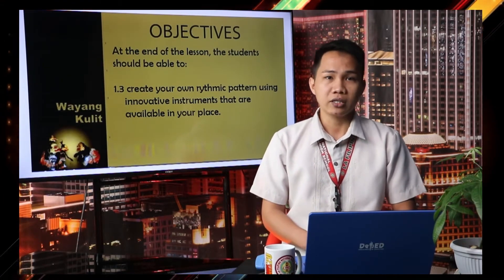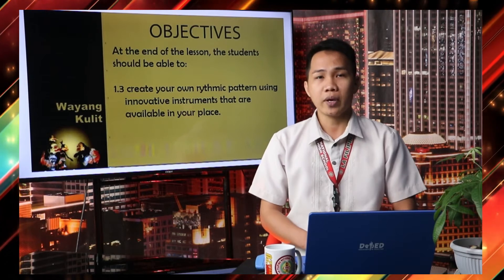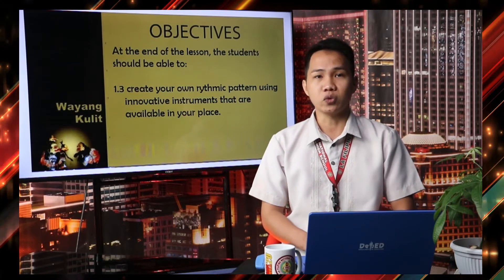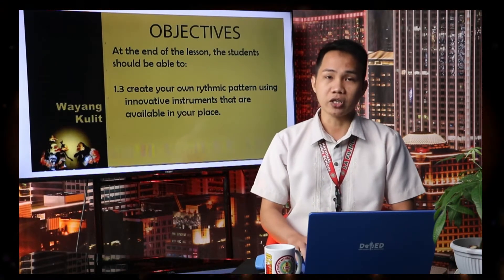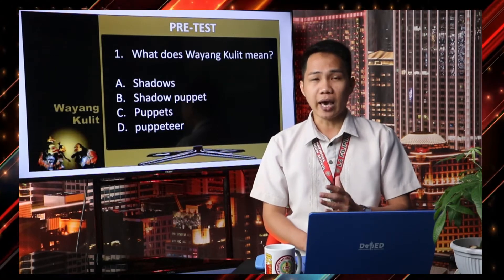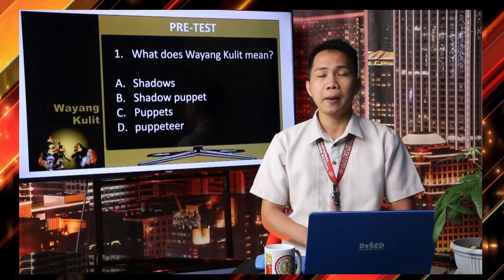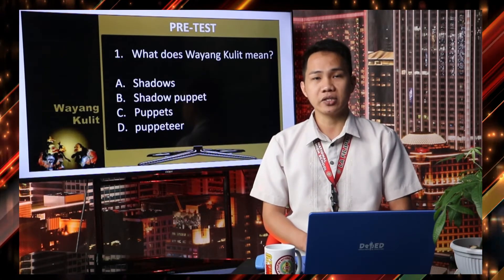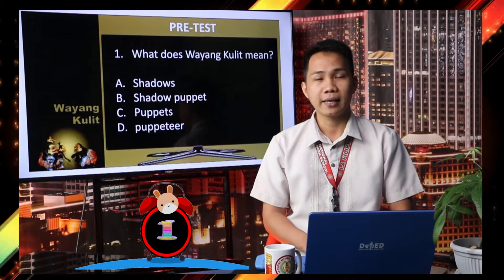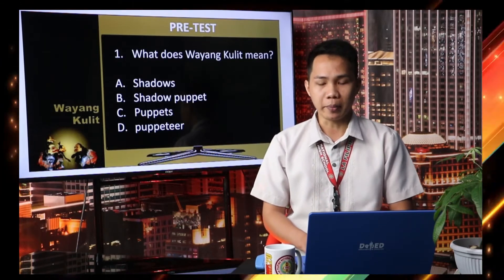Students, prepare your paper, pen, and pencil to answer questions in your pre-test. Every item, I will give you five seconds to answer. Question number one: What does Wayang Kulit mean? A. Shadows, B. Shadow Puppet, C. Puppets, D. Puppeteer. Your five seconds starts now. Time is up. The correct answer is Letter B, Shadow Puppet.